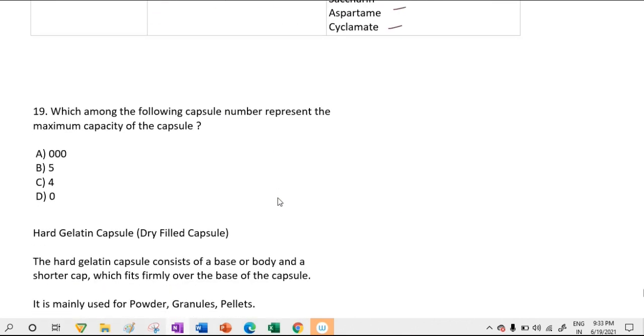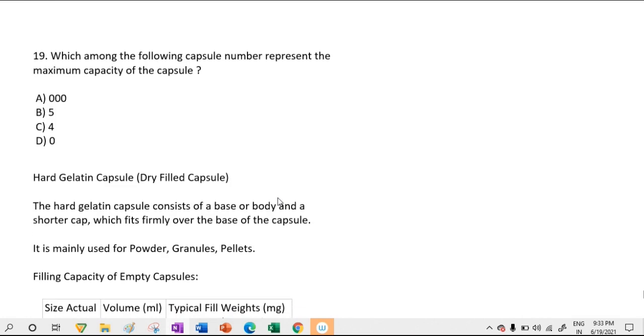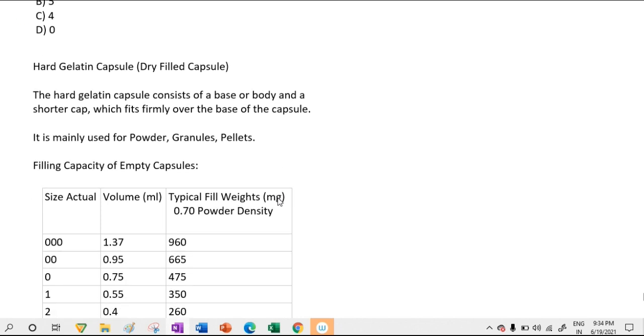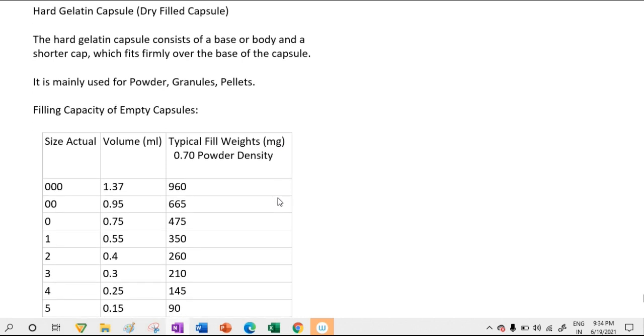Next question: which among the following capsule number represents the maximum capacity of capsule? Options are 0, 00, 000, or 1. This can be confusing, but the maximum capsule capacity is 000, and the answer is A. 000 represents maximum capacity.